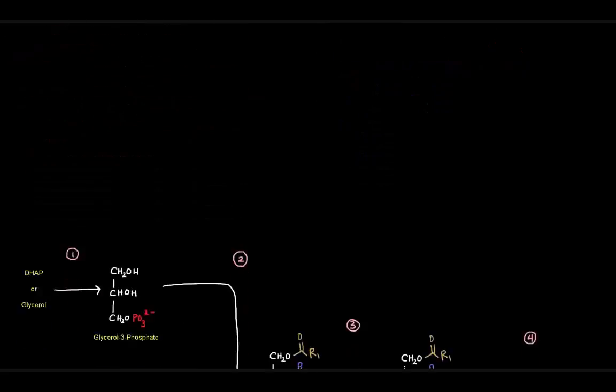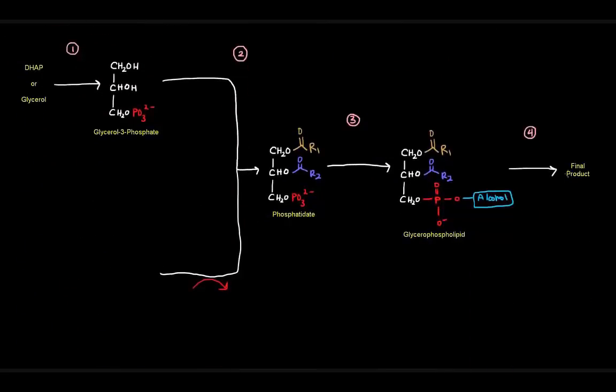So let's get an overview of what that might look like. The first thing we're going to do is form glycerol 3-phosphate, which is what we saw earlier with triglycerides. This is basically going to be our backbone. So this first step is making our backbone, and we get this glycerol 3-phosphate from dihydroxyacetone phosphate or glycerol.